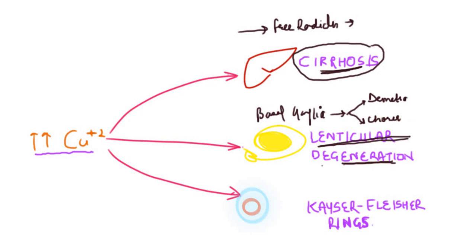The third clinical feature associated with Wilson's disease is what is called Kayser-Fleischer rings. These are rings composed of copper found in the cornea. So these are all the clinical features associated with Wilson's disease.